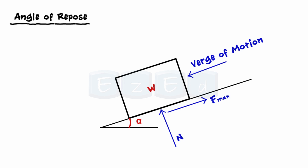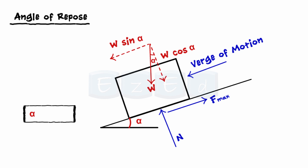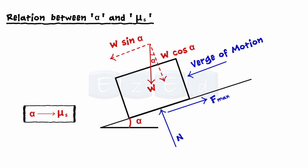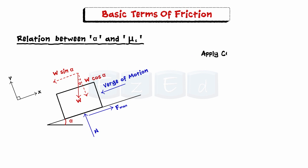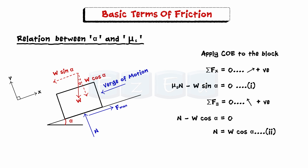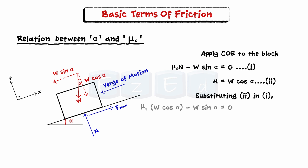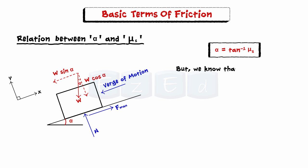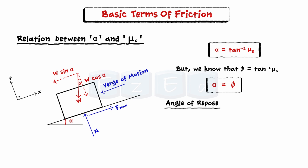The angle of repose is independent of the weight of the body and depends only on the coefficient of static friction. We will now derive the relation between angle of repose alpha and coefficient of static friction μs. We will first select the axis for the block as shown in the figure. Applying conditions of equilibrium — equating the summation of all forces along the x-axis and y-axis to zero and simplifying — we find that the angle of repose alpha is equal to tan inverse of μs. But we know that the angle of friction phi is also equal to tan inverse of μs. Hence, we can say that the angle of repose is equal to the angle of friction.